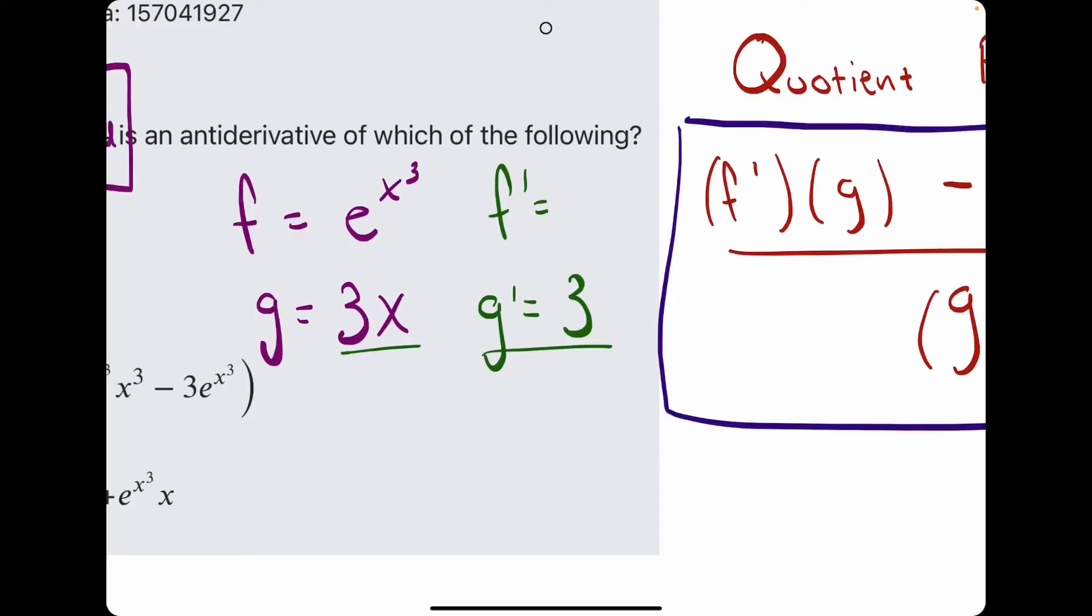F prime. A little trickier. E to the anything has the derivative of e to that anything. So, that term is just repeated. But then, chain rule says we have to multiply by the derivative of the inside piece. In this case, that is the exponent. The derivative of x cubed is, using the power rule, we bring out the 3, we leave the x, and we subtract 1 from the exponent to get 3x squared.